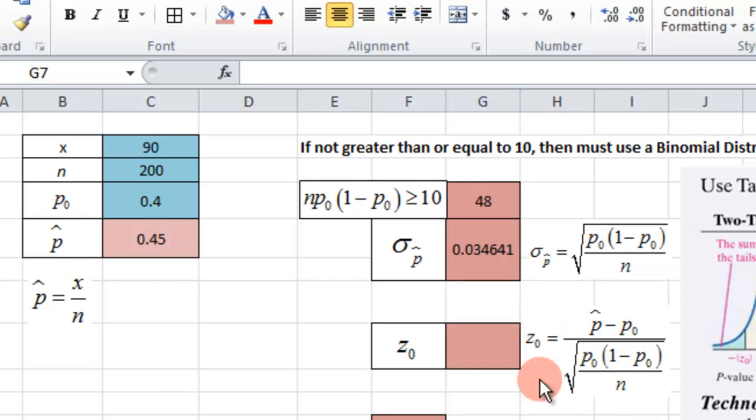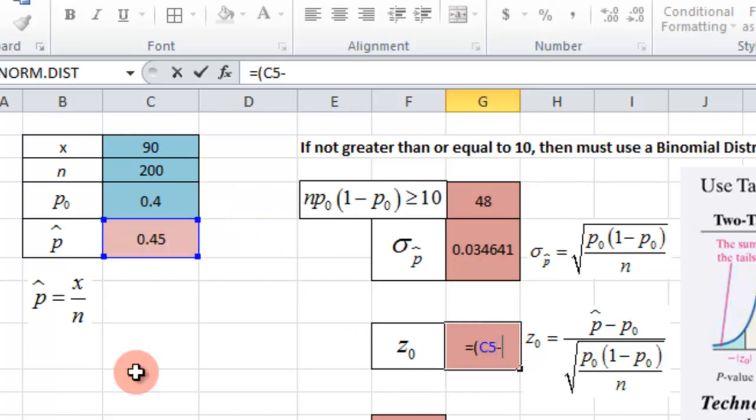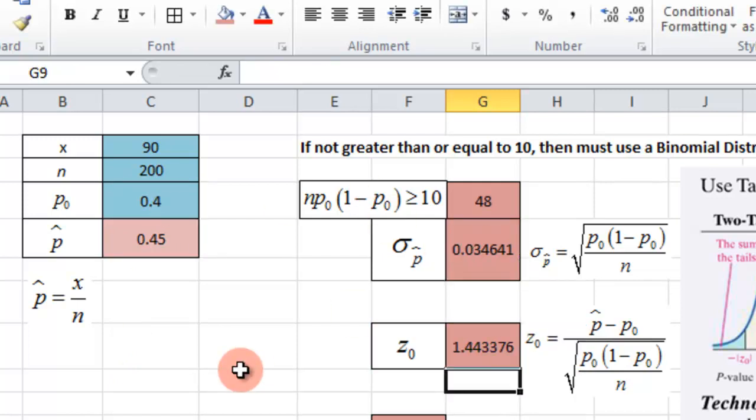Now we're going to compute the test statistic z-naught. That is going to be p-hat minus p-naught divided by that standard deviation. So we're going to take the p-naught point estimate minus the p-naught divided by standard deviation. And there's our z statistic, or z-naught, -1.443376.